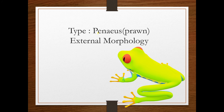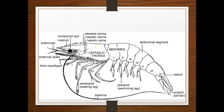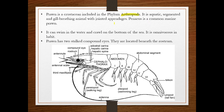In this video we are going to study more about the details of the prawn — this is called a type study. Let's look at the external morphology of Penaeus. It is a common marine prawn. It has compound eyes; when you look at the external features, it has a compound eye located behind and beneath the rostrum.